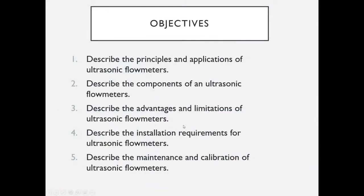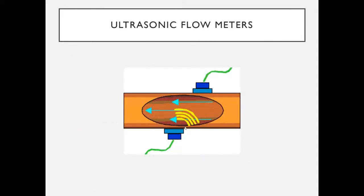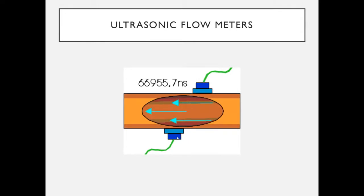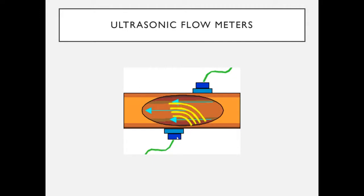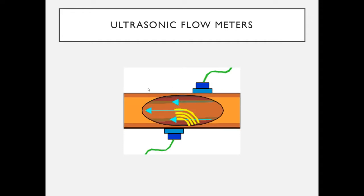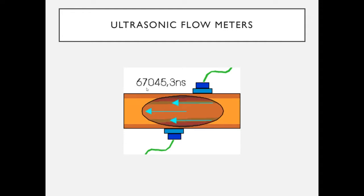Our objectives for this ILM are: principles and applications, components, advantages and limitations, installation, maintenance, and calibration for ultrasonic flow meters. Here's a quick image of transit time with numbers showing that travel time against the flow is slower than travel time with the flow, and this is the technology used to drive our flow rate measurement.